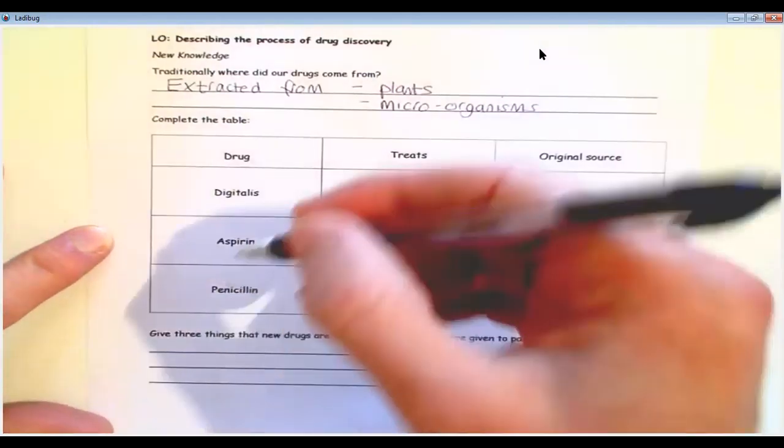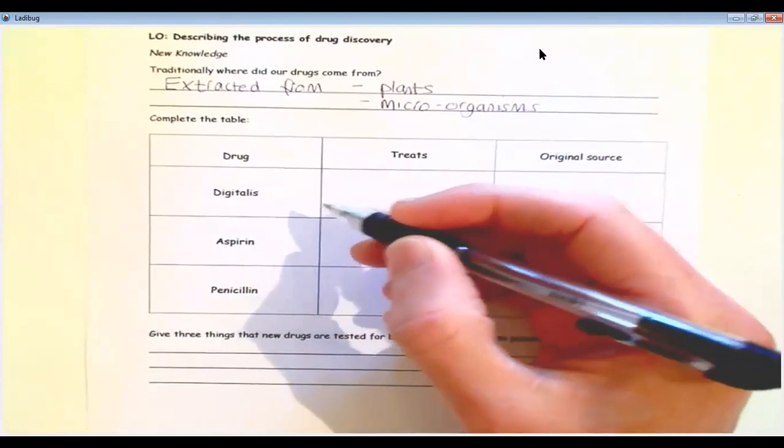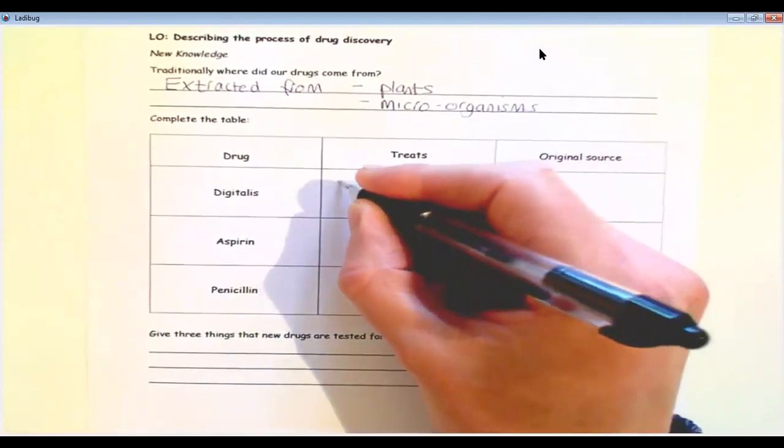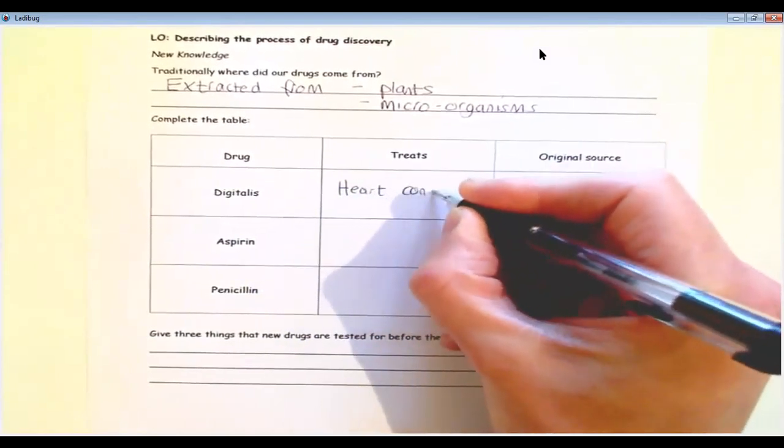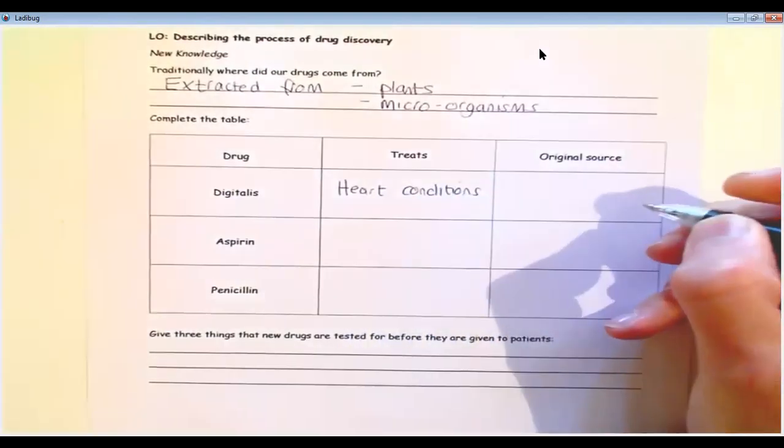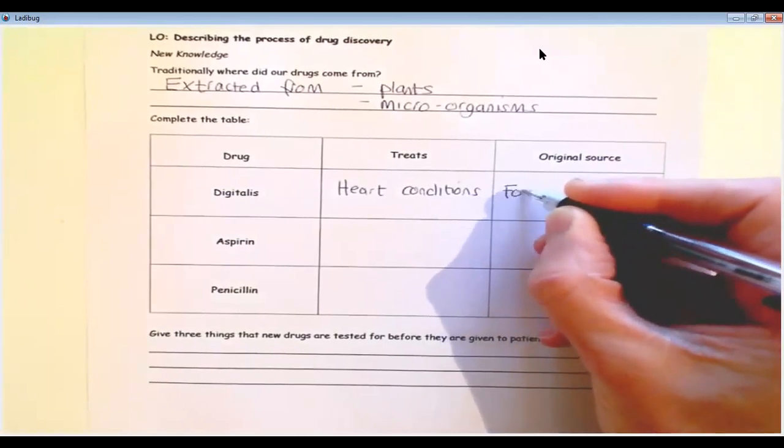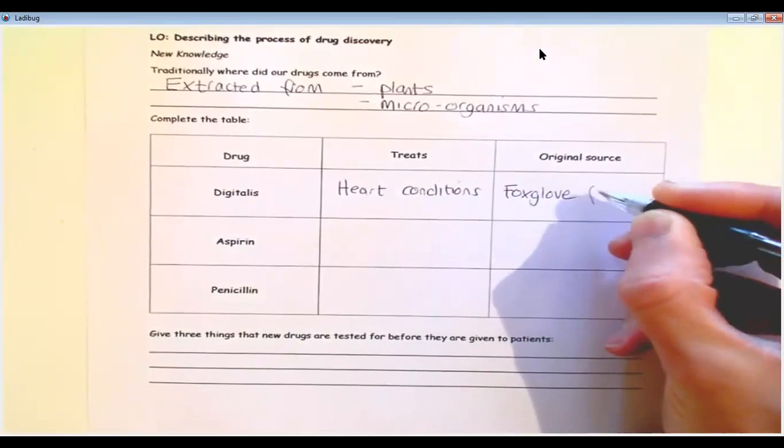I've got three examples in this table. We have what's called Digitalis, which is a very common drug, which is used for the treatment of certain heart conditions. Now, Digitalis originally came from the foxglove, and that's obviously the plant.